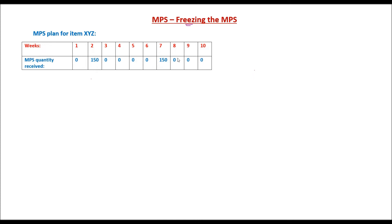Assume that you have the following MPS for an item, let's say XYZ. This means that 150 units of the item need to be manufactured in week 2 as well as in week 7. We are assuming that the lead time of manufacturing this item is one week, so the initial start of production happens in week 2 and it is delivered in the same week — and the same for week 7.